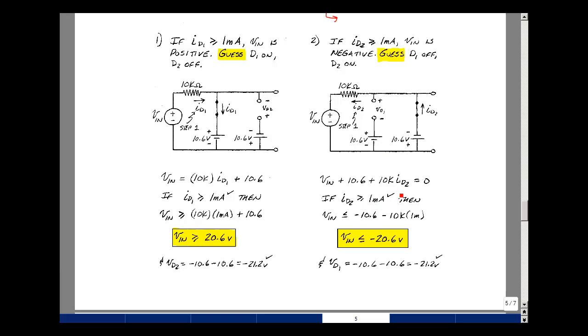If ID2 was 1 milliamp, then this would be 10 volts. And that would have 20.6 volts. On the other side of the equation, it would be a minus 20.6 volts. And then if the current increases, then when you bring it on the other side, it becomes more negative. VN then would be less than or equal to minus 20.6 volts when LED 2 starts to light.